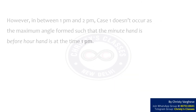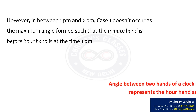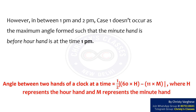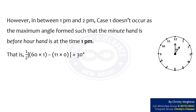However, between 1 pm and 2 pm, Case 1 doesn't occur, as the maximum angle formed such that the minute hand is before the hour hand is at the time 1 pm. The angle between 2 hands of a clock at a given time equals half into modulus of (60h - 11m), where h represents the hour and m represents the minutes. At 1 pm, the angle equals 30 degrees, as shown in the figure.